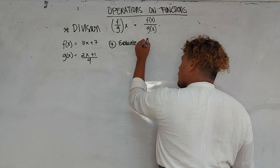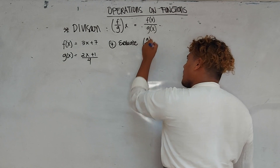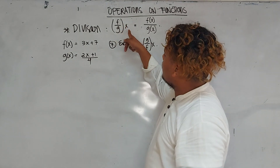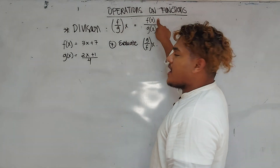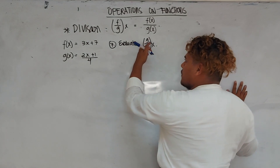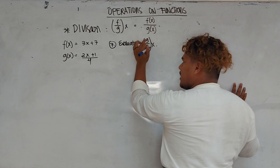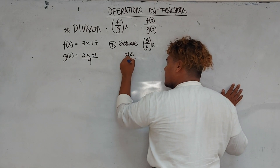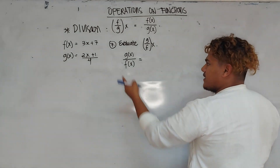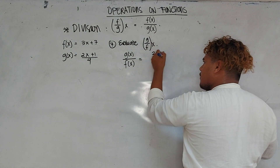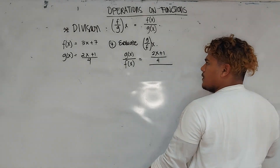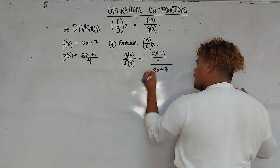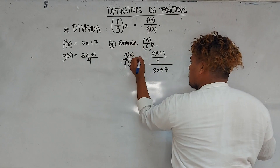Evaluate g over f of x. The concept goes like f over g of x is equal to f of x over g of x. Therefore, g over f of x is equal to g of x over f of x. What is the value of your g of x? That is 2x plus 1 over 4, over... what is the value of your f of x? That is 3x plus 7. What will happen next?